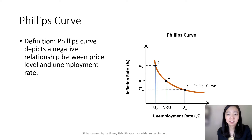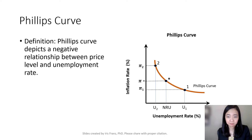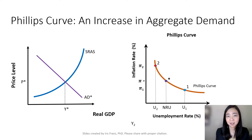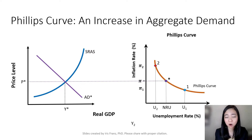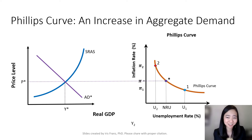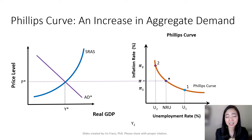The Phillips curve depicts a negative relationship between the inflation rate and the unemployment rate. Suppose we start at an initial equilibrium with potential output Y*, and our price level P* corresponds to our target inflation rate pi* — let's say 2%. At this point, our unemployment rate is at the natural rate of unemployment.